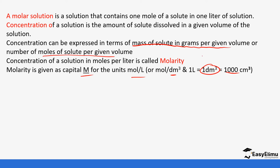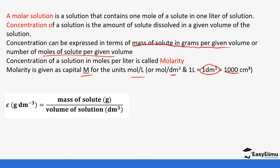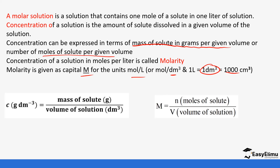Molarity can be calculated using a formula. The formula is: concentration equals mass of solute over volume, or moles of solute over volume. We are going to be using the formula and also the first principle method. I'll explain how the first principle method applies when we come to the question. Let's do a few examples so you can see how this formula is applied.